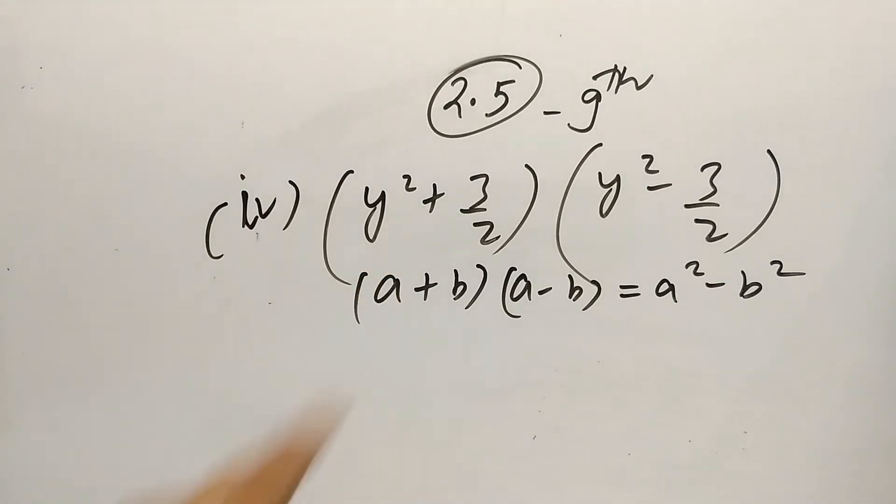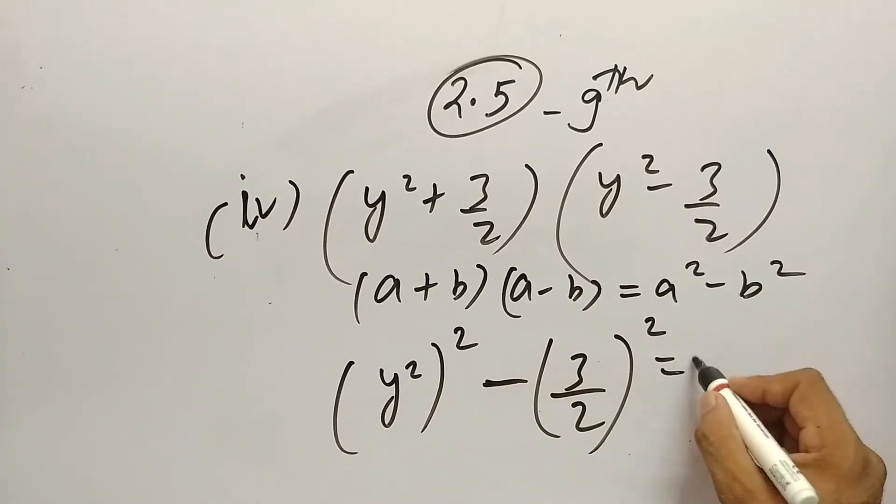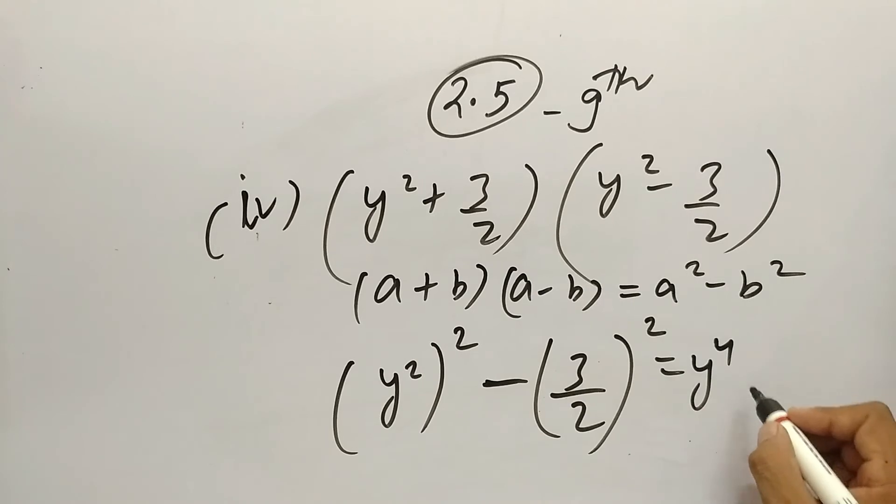Now it will be a² - b². What is a? y² + 3/2. So (y²) whole squared minus b, which is 3/2. So (3/2) whole squared. So y² squared, what will it be? y⁴ minus 3 squared is 9 and 2 squared is 4.